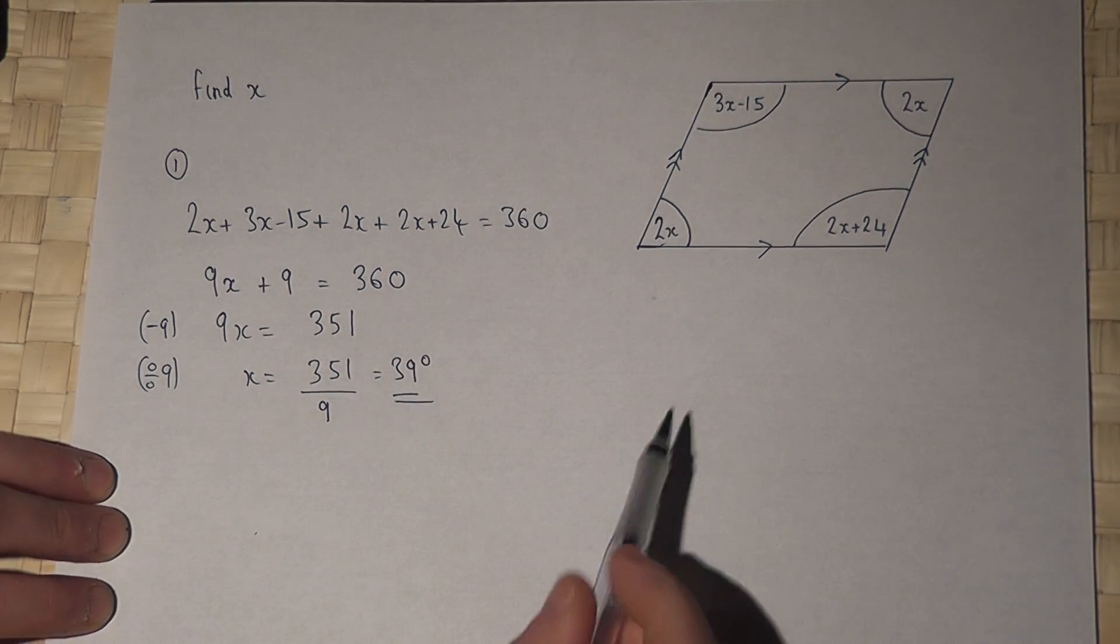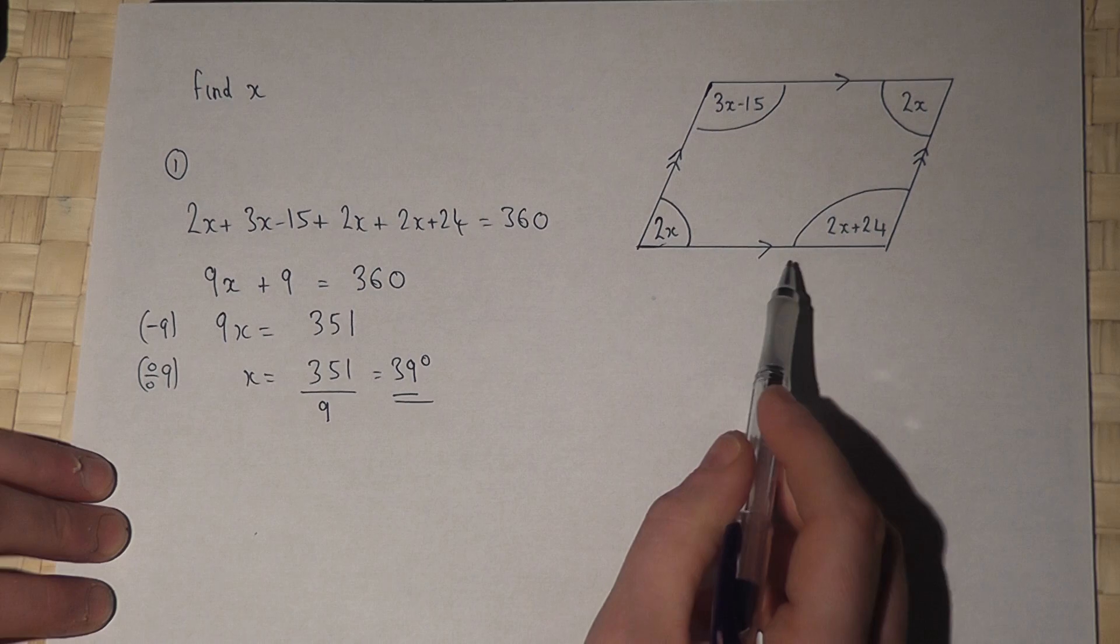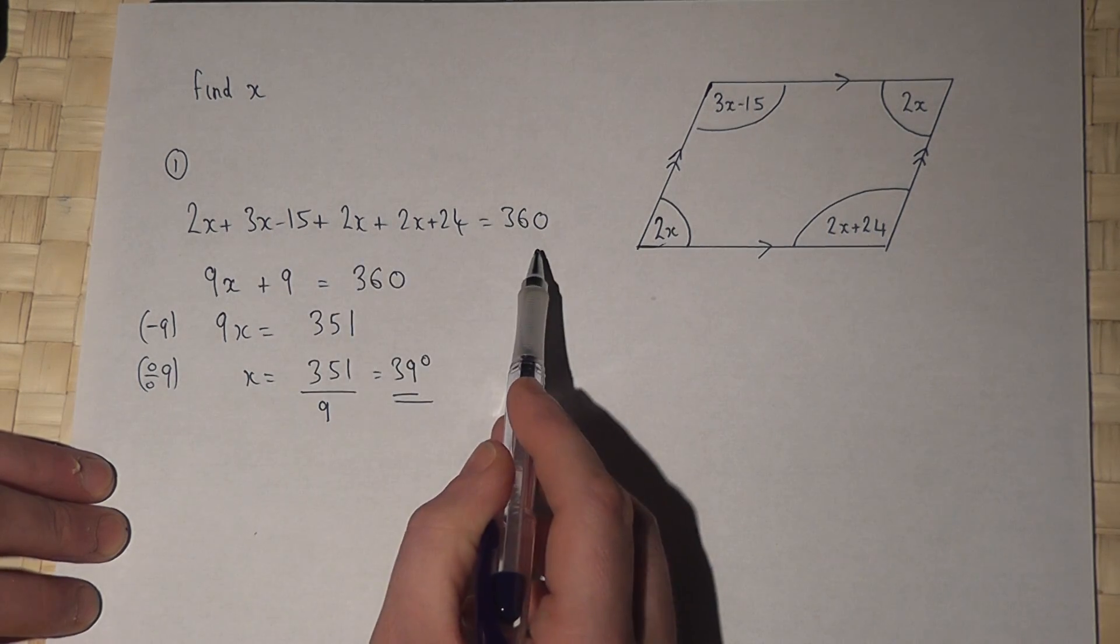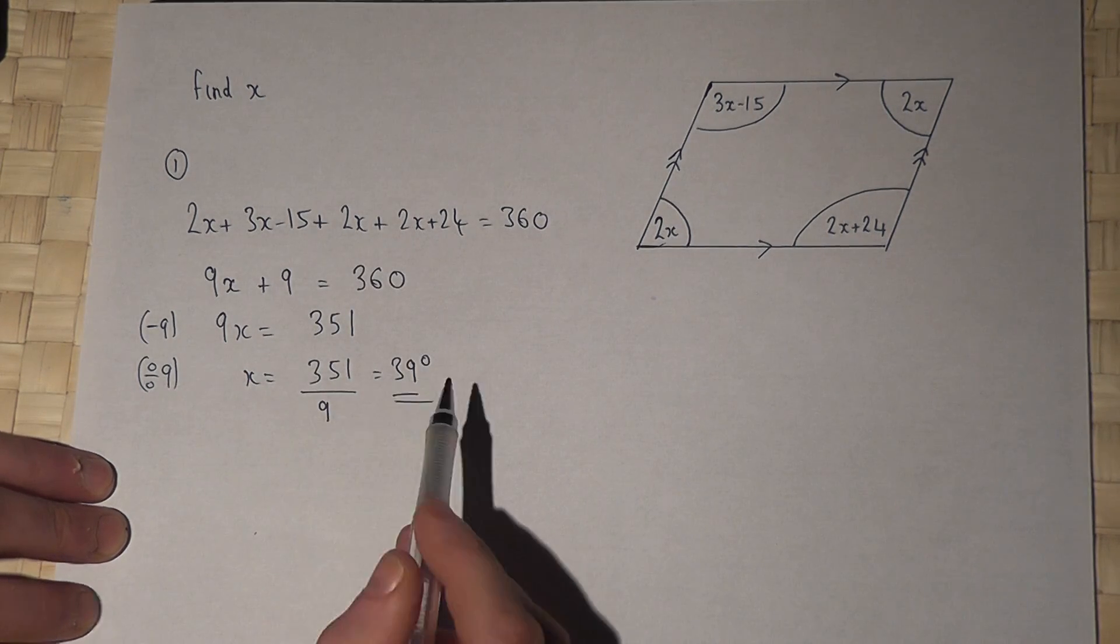So if I consider this as a four-sided shape, the angles add to 360, I get the equation, solve it, and the answer is 39.